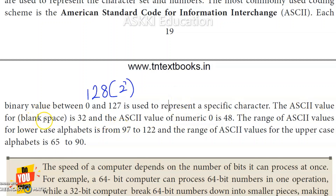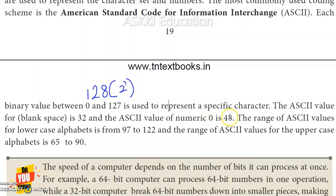For example, the ASCII value for a blank space is 32, which in binary is represented using 7 bits. So 7 bits are used to represent each ASCII character.